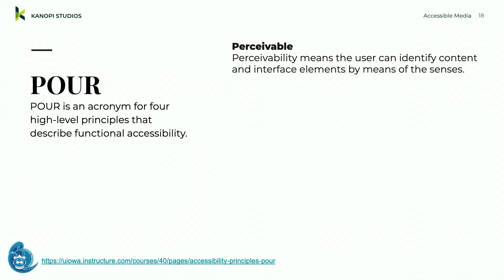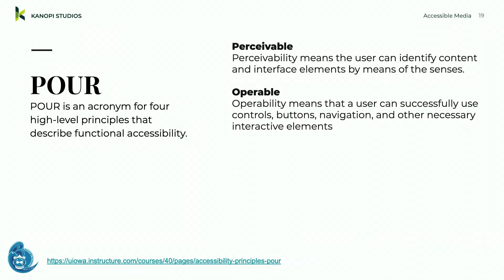POUR is an acronym for the four high-level principles of accessibility. Perceivable means the user can identify content and interface elements by means of the senses — information must be presentable in ways the user can perceive. Operable means the user can successfully use controls, buttons, and navigation. We want to make sure keyboard functionality is available, users have enough time to process information, and content doesn't cause seizures or physical reactions.